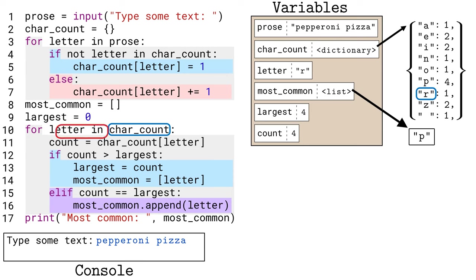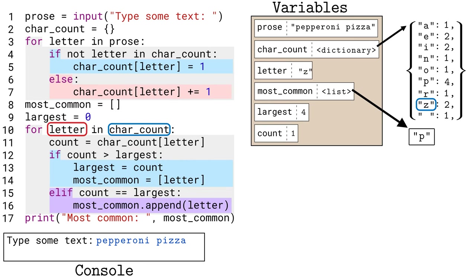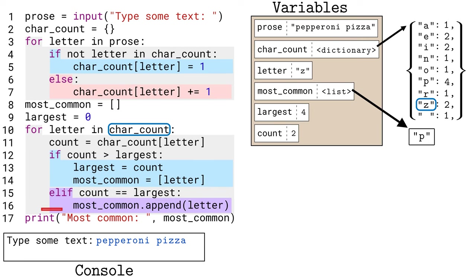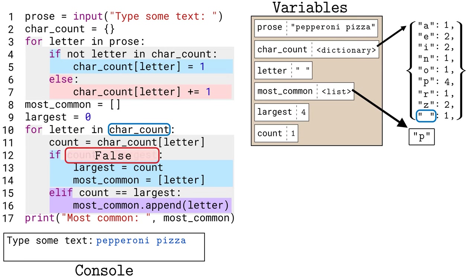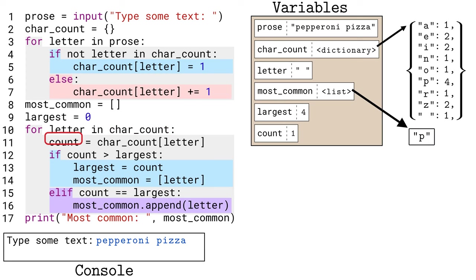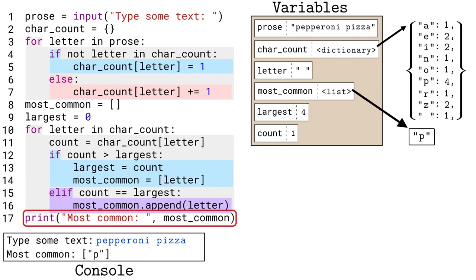We humans can see no remaining value in the dictionary is greater than 4, but Python must check all keys to guarantee it finds the largest value and associated keys, no matter how the data is arranged. When the loop gets to the character 'p', it finds the value 4 is bigger than the largest count seen so far, updates 'largest', and creates a new list to completely replace 'most_common'. Eventually the loop has no more keys to check, so it finishes and Python goes to the last line, which prints the result. Python has found the most common letter in 'pepperoni pizza' to be the letter 'p'.